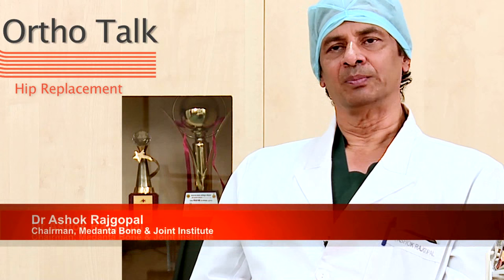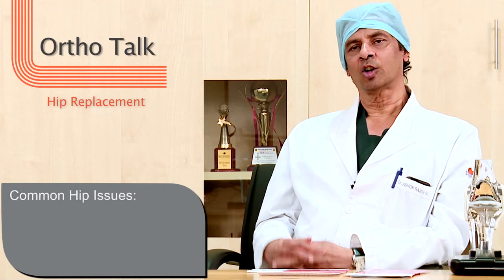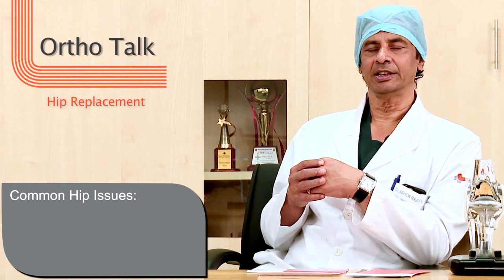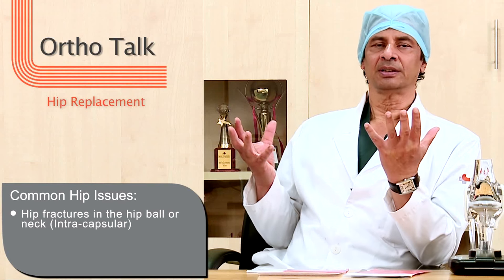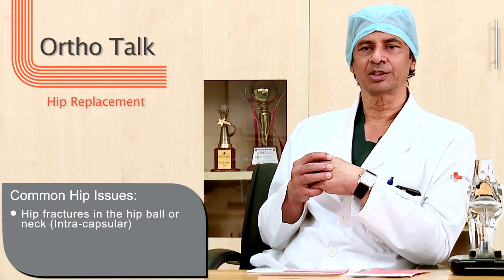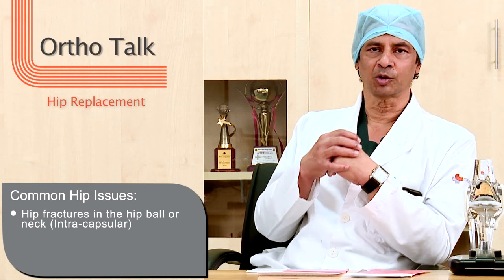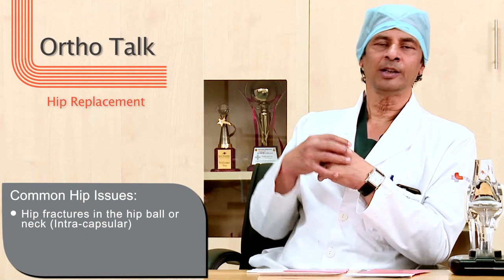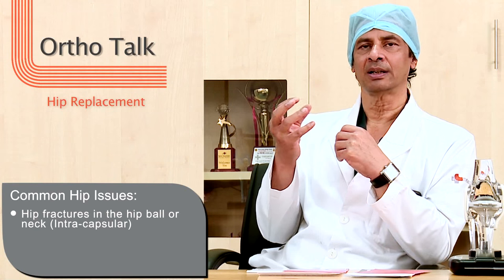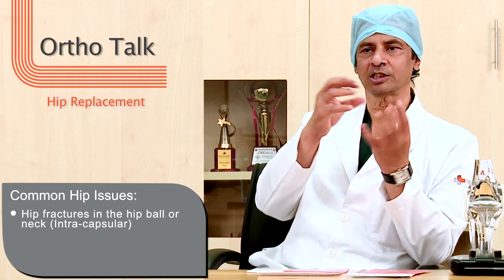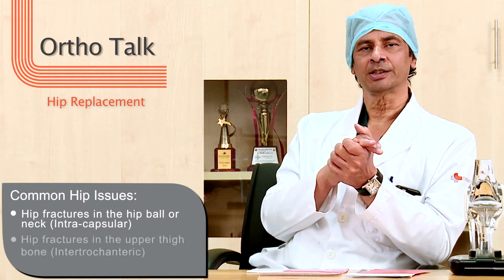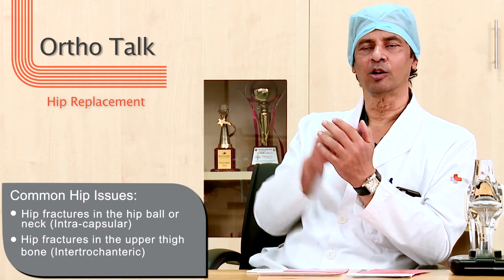In terms of hip diseases, the commonest variety of hip problems that we see in this part of the country is fractures. Fractures are very common in the hip, particularly in the elderly population — they fall, there is osteoporosis, the bone is weak, and you can get fractures which are broadly divided into two parts: one is called the intra-capsular part, which is the part of the ball that breaks off, and the inter-trochanteric part, which is a slightly lower fracture.